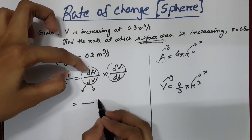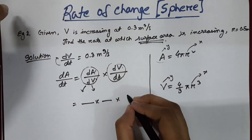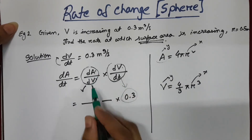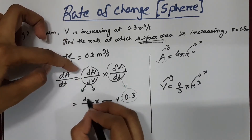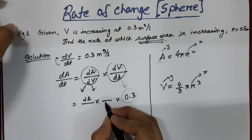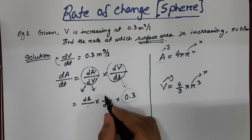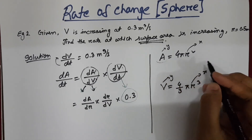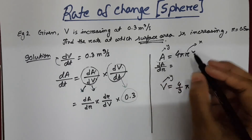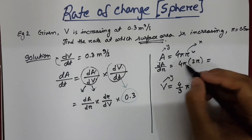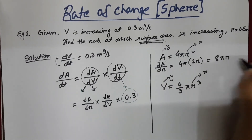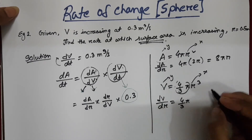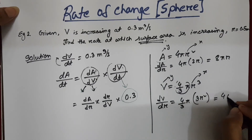Since it is dA/dV, I will take two terms: dV/dt, whose value is 0.3, and then break dA/dV into dA/dr times dr/dV. We differentiate area with respect to r: dA/dr = 4π times 2r = 8πr. We differentiate volume with respect to r: dV/dr = 4/3 π times 3r² = 4πr².